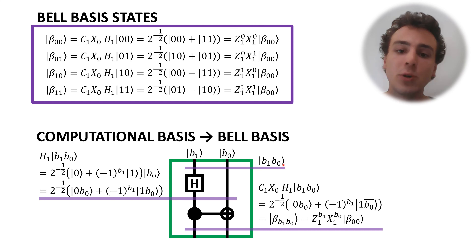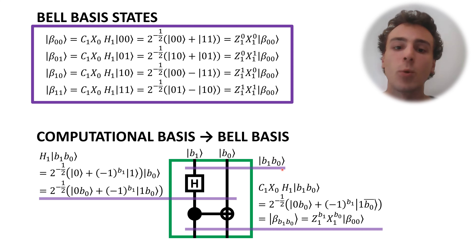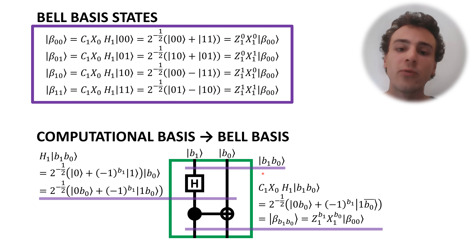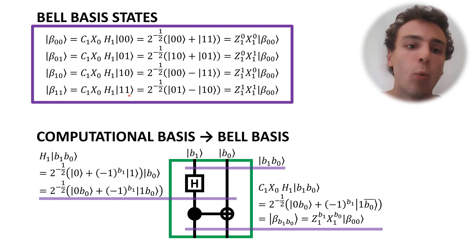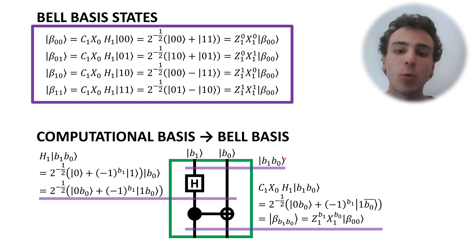This allows us to have a general notation when we use B1 and B0, which includes all four options: 00, 01, 10, and 11. It's a very condensed notation.